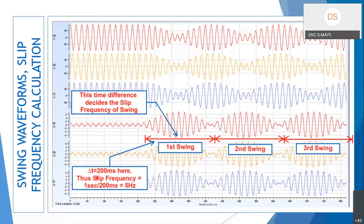This diagram is important. The slip frequency, power swing frequency, or pole slip frequency is not the 50 Hz power system frequency — it is this particular envelope timing. Frequency is the number of repetitions per second, so the timing of one repetition decides this. This is what we will discuss throughout.